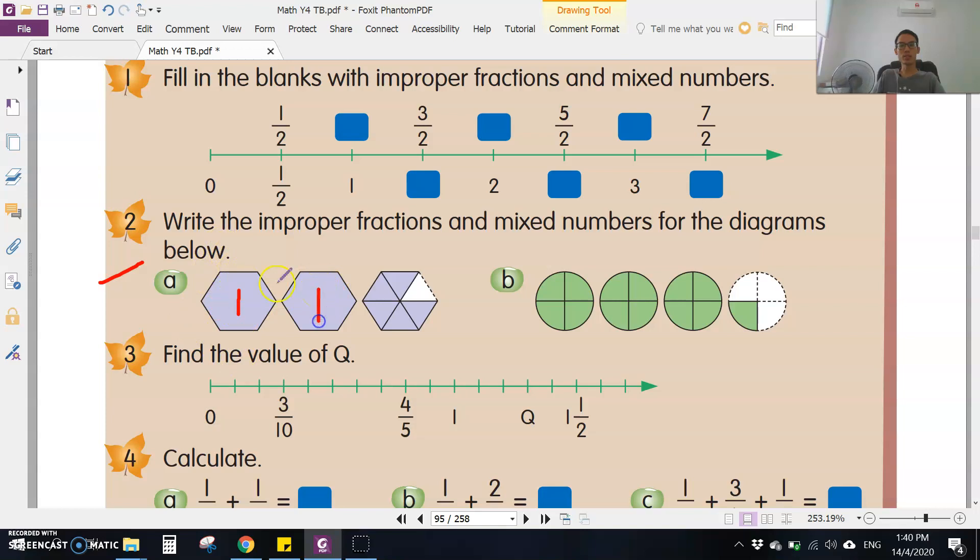This is one, this is two. This one has six triangles. How many are shaded? One, two, three, four, five - only 5. Then this is 1, this is 2. So the answer is 2 5/6.